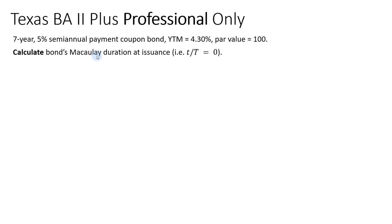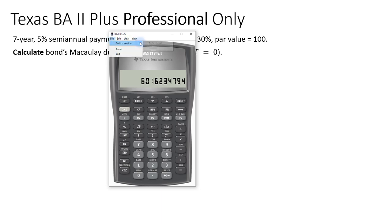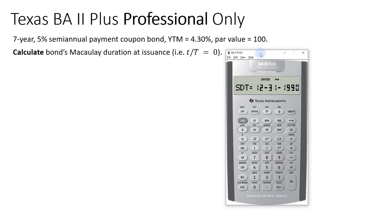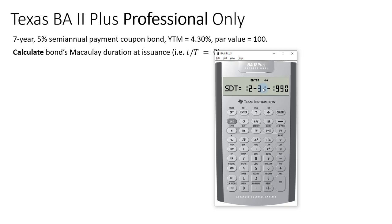The last method is to use the bond function in the financial calculator. This is only available on the professional version of the Texas Instruments BA2 Plus. I'll switch over to the professional version. The bond function requires a specific date to be entered, but we can work around that. The settlement date will be December 31, 1990, which we'll treat as the issuance date.